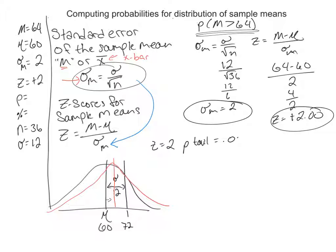When z equals 2, then the proportion in the tail is equal to 0.0228. And 0.0228 can also be expressed as a percentage. So we have 2.28%.